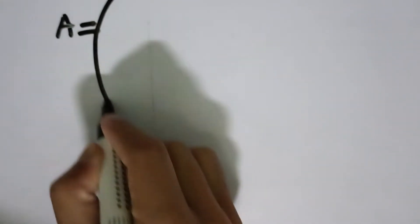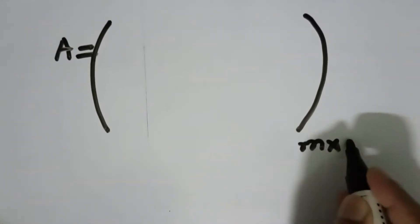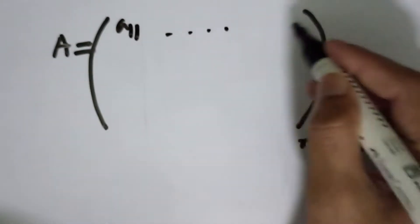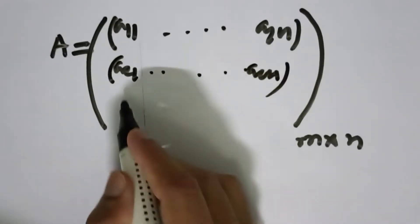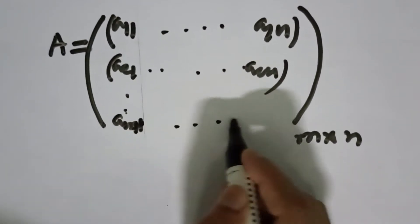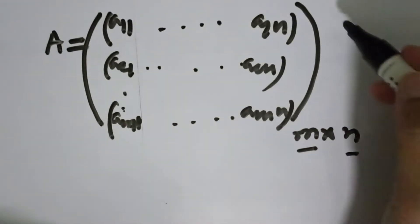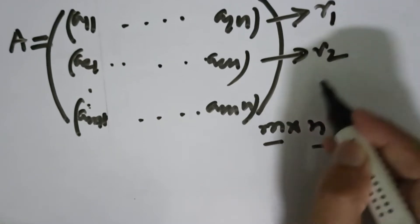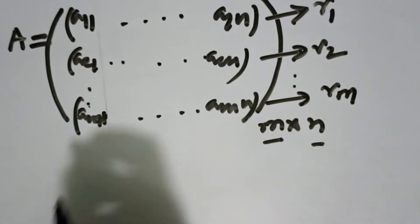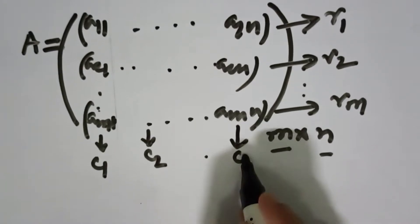Suppose we have a matrix — an M×N matrix. The first row is A11, A12, ... A1N. The second row is A21, A22, ... A2N. And the last row is AM1, ... AMN. So this is a matrix with M rows and N columns. I am naming the rows R1, R2, ... RM, and the columns C1, C2, ... CN.